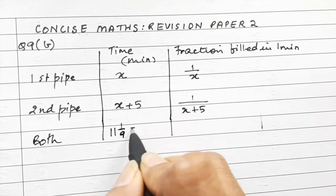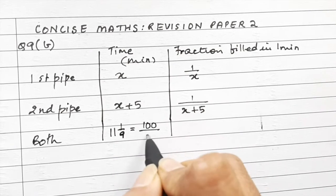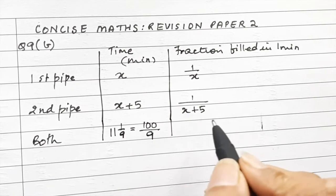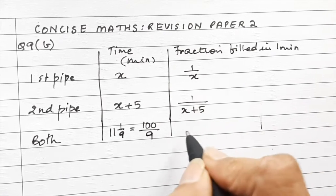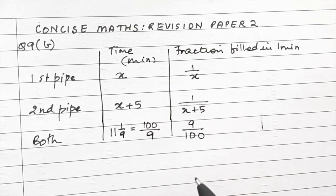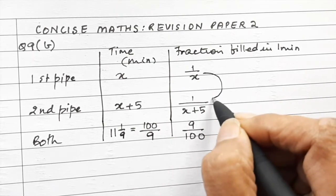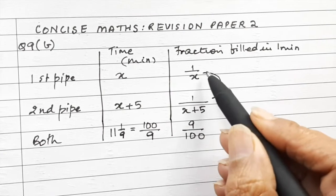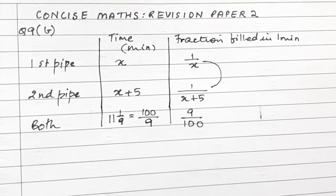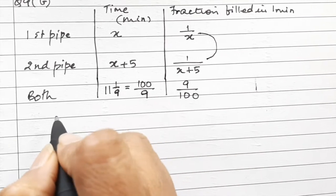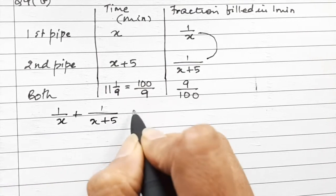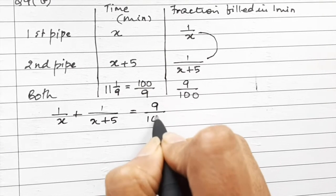Both pipes running together take 11 and 1/9th minutes, which equals 100 upon 9 minutes. So in one minute, both pipes together fill 9 upon 100 of the tank — the reciprocal of 100/9. Therefore, the sum of the two fractions equals 9 upon 100. Our equation is: 1 upon x plus 1 upon x plus 5 equals 9 upon 100.